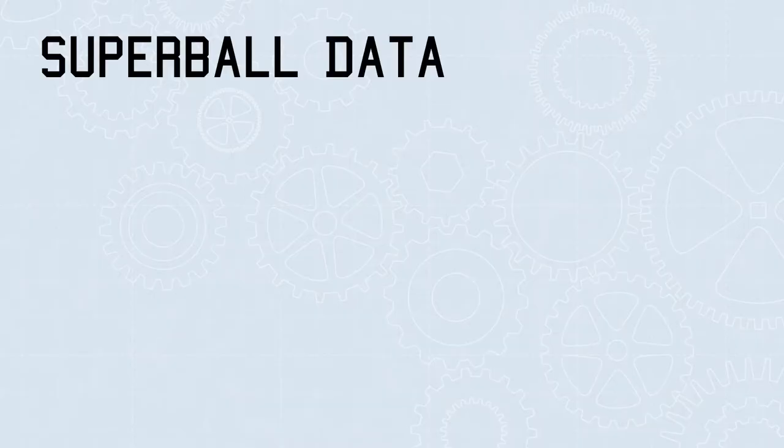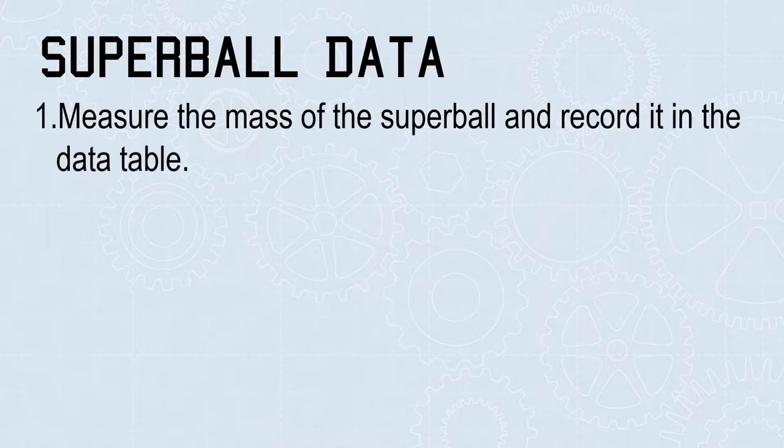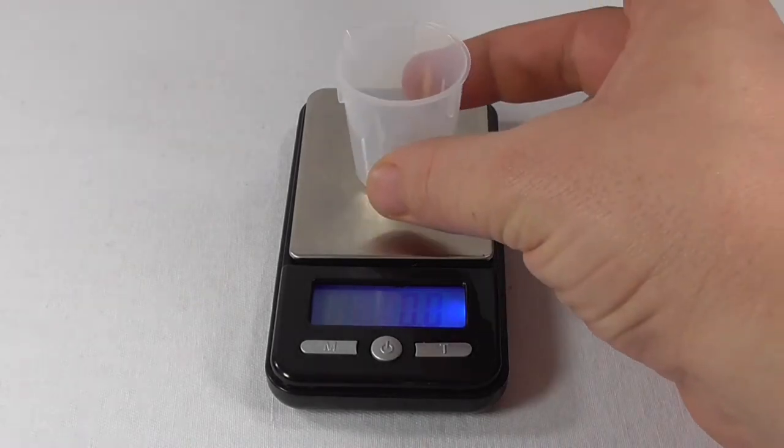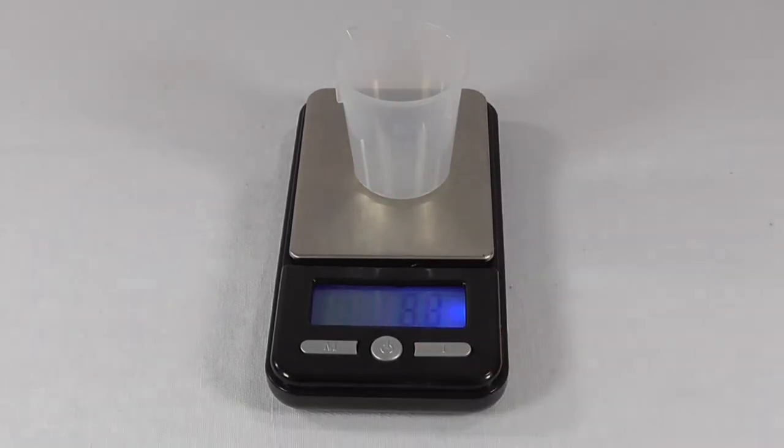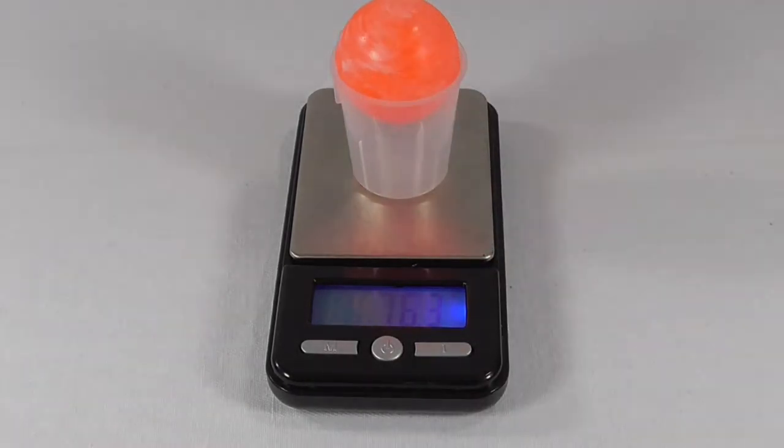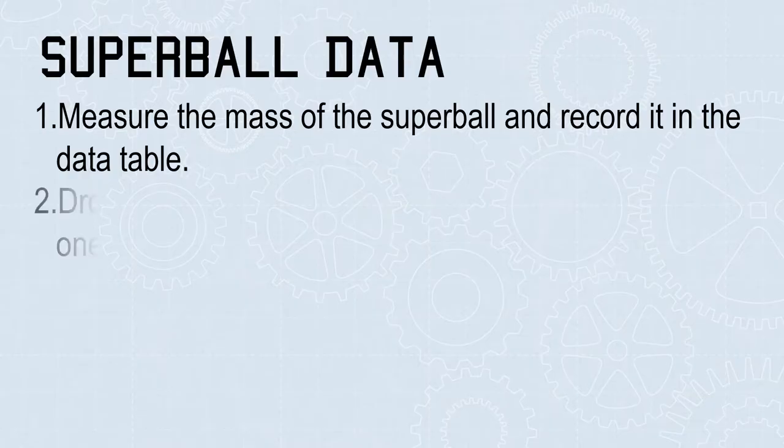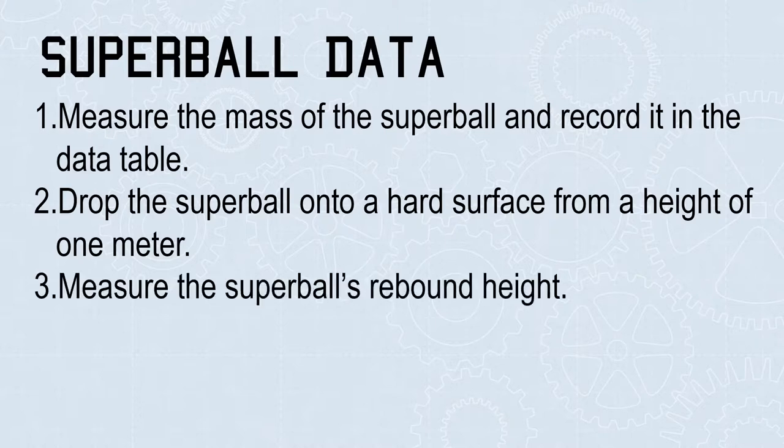Follow these steps to collect your Superball bounce data. 1. Measure the mass of the Superball and record it in the data table. Use a small measuring cup to keep the ball from rolling off, but remember to zero the scale. 2. Drop the Superball onto a hard surface from a height of 1 meter. 3. Measure the Superball's rebound height.